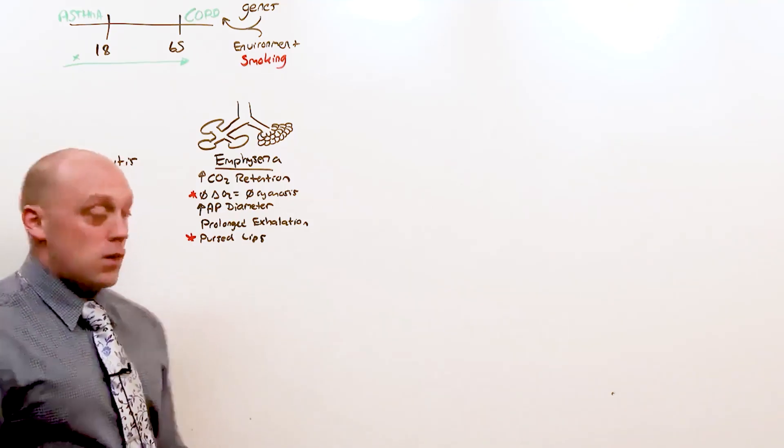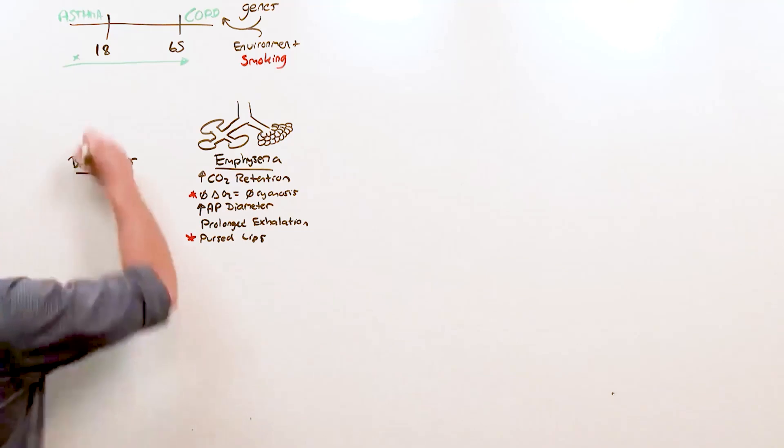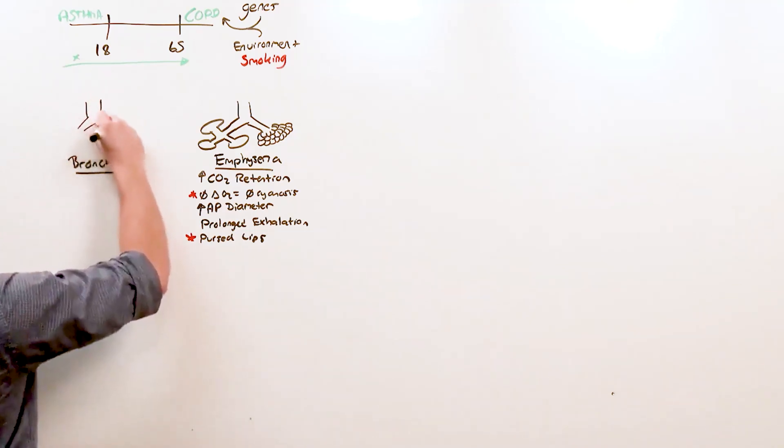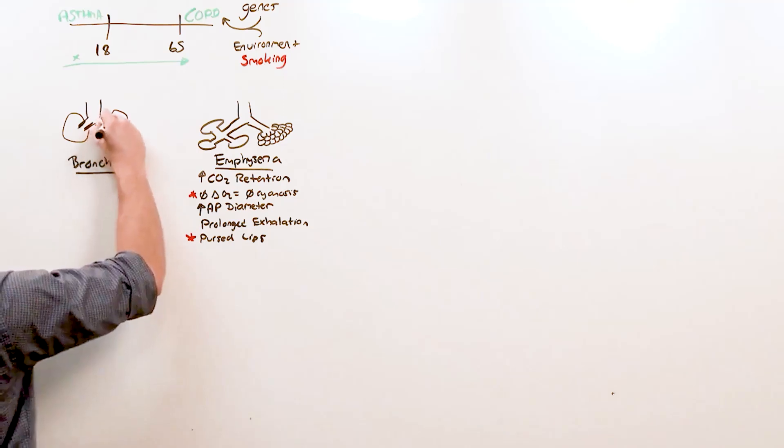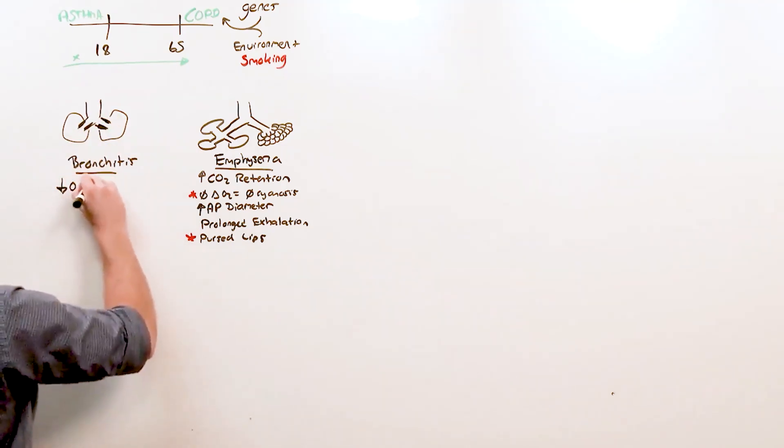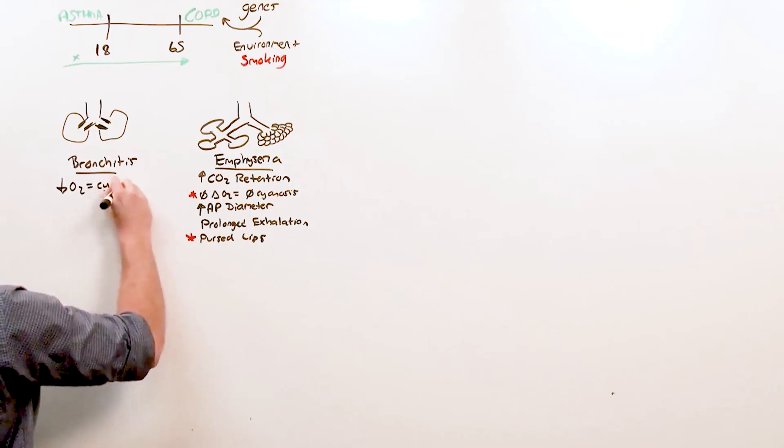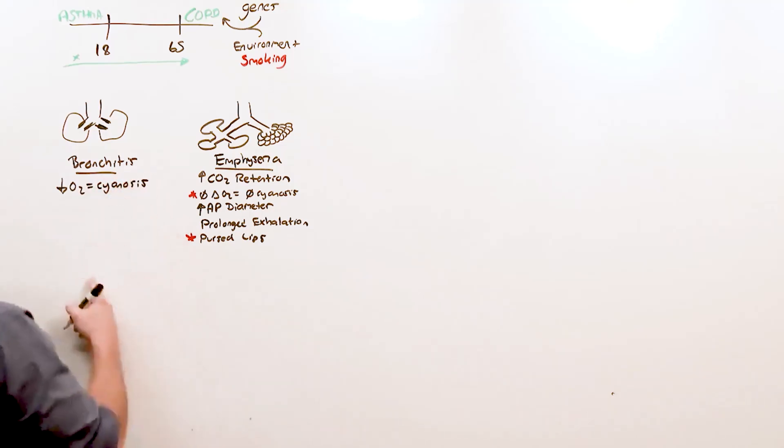It is the combination of the pursed lips and the absence of cyanosis that gives these characters the name pink puffers. Whereas on the other side, bronchitis, you have inflammation of the airways, which leads to decreased oxygen, which leads to cyanosis, hypoxemia and cyanosis.